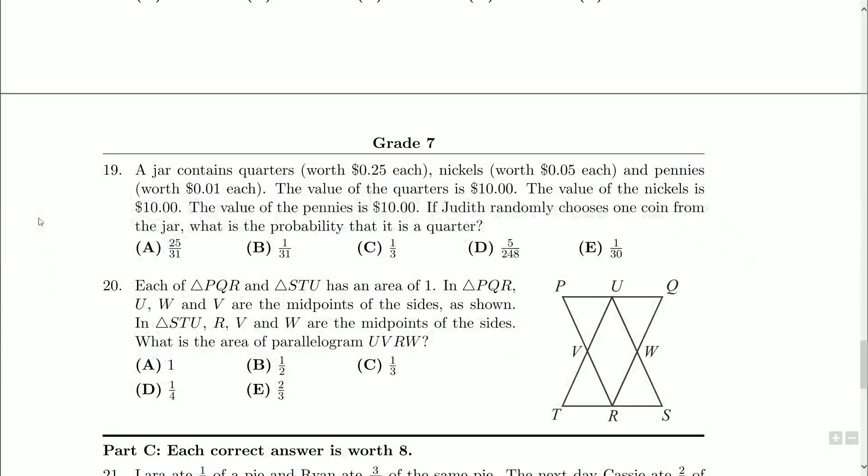Hello, everybody, and welcome back. We're still looking at our Grade 7 Gauss paper from the year 2009. We're up to question 19. A jar contains quarters, nickels, and pennies, and if you don't know these amounts for Canadian currency, here we've got them right here, 0.25 of a dollar, 0.05 of a dollar, and 0.01 of a dollar.